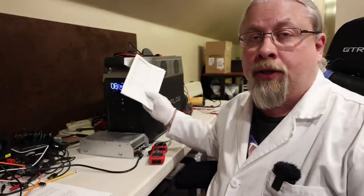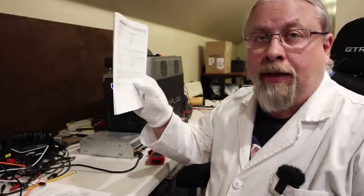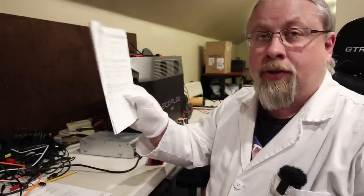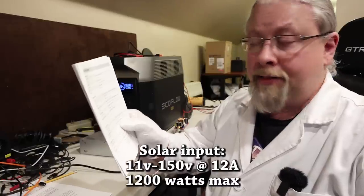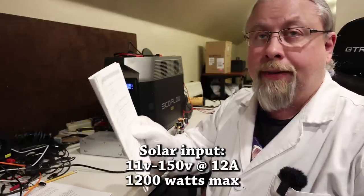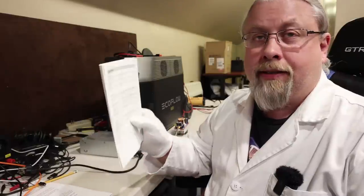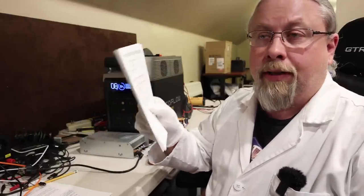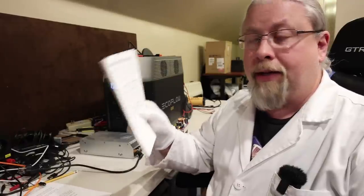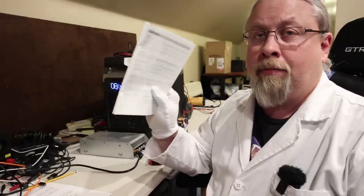Now let's talk about solar charging the Delta Pro. In the manual here, it says it will charge from 11 to 150 volts, 12 amps maximum, 1,200 watts maximum. The problem with this is that this basically forces you to run panels in series instead of parallel because of the 12 amp maximum.